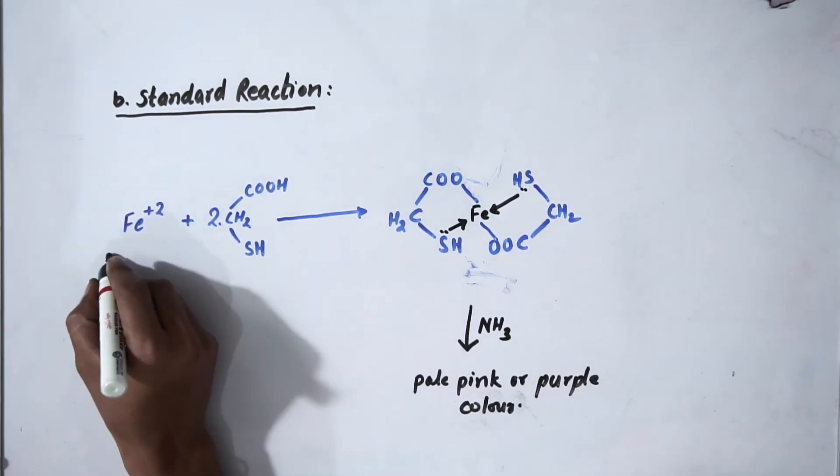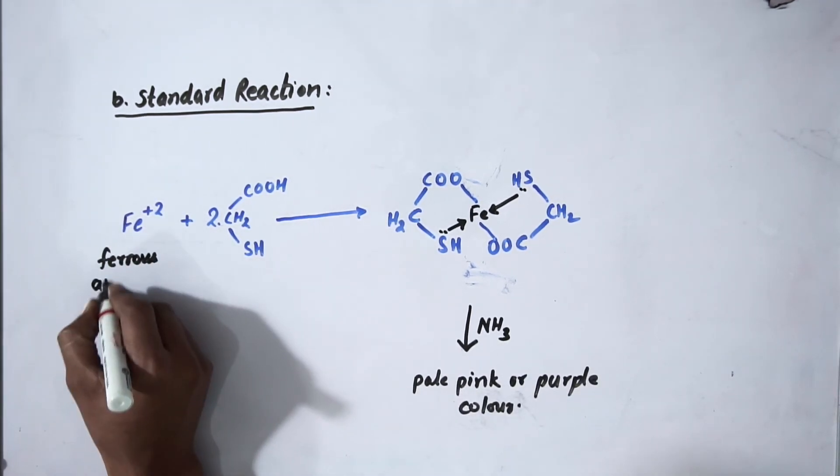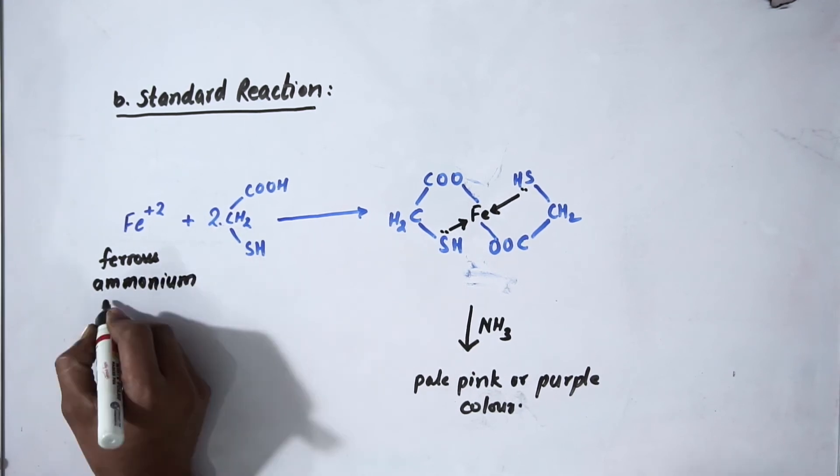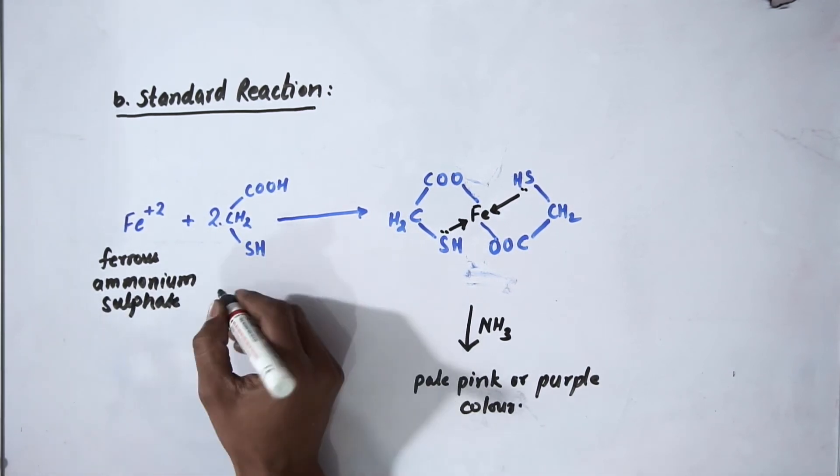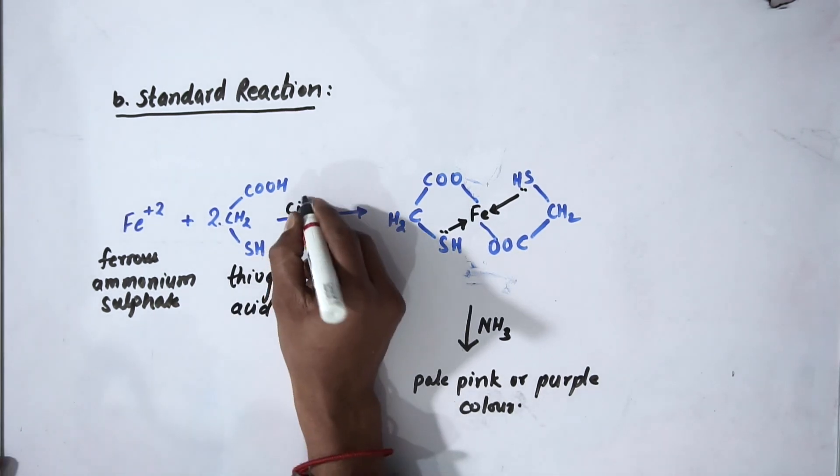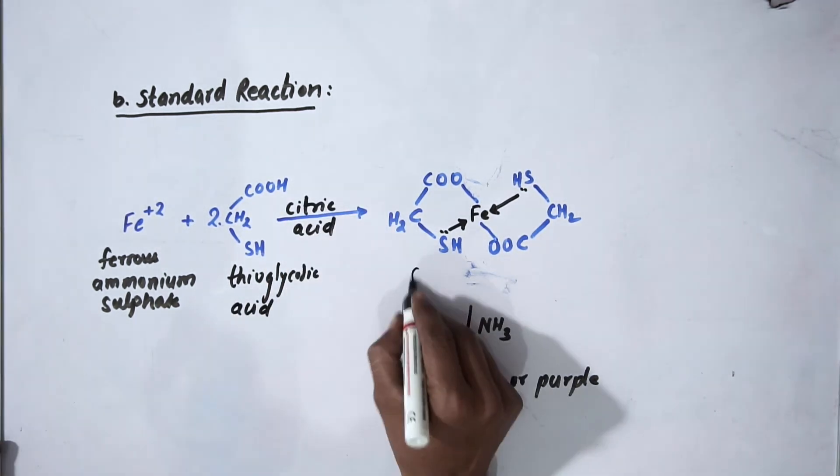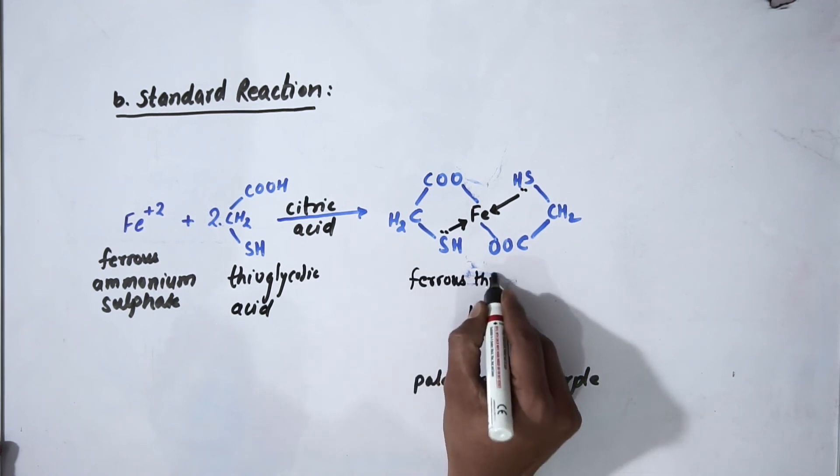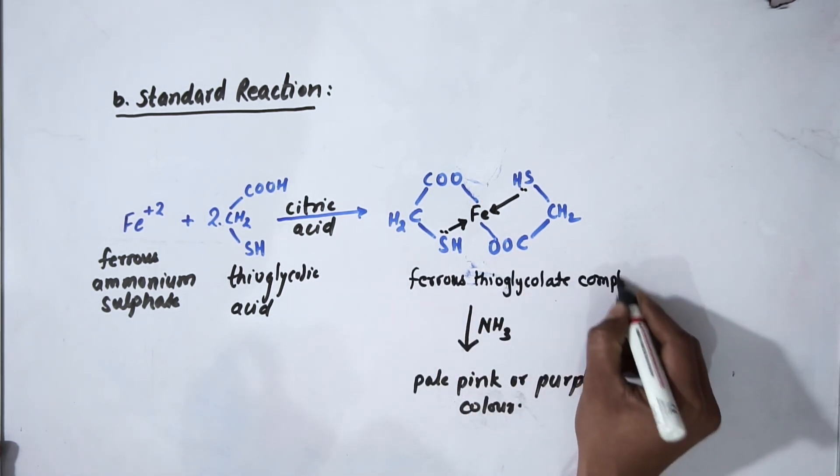Now write the name in word form. This is ferrous ammonium sulfate, this is thioglycolic acid, here there will be citric acid, and this is ferrous thioglycolate complex. This is all about the reaction involved in limit test for iron.